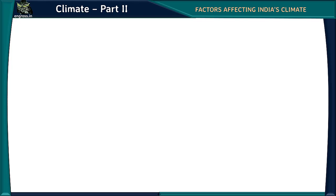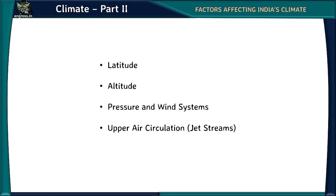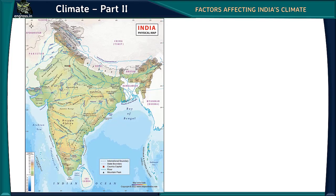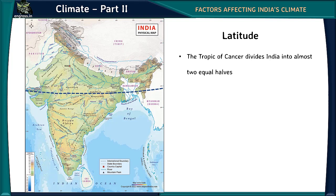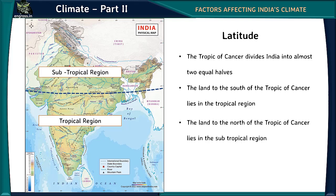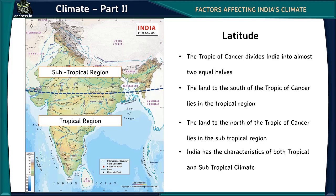Factors that affect India's climate are latitude, altitude, pressure and wind systems, and upper air circulation, i.e. jet streams. The Tropic of Cancer divides India into almost two equal halves. The land to the south lies in the tropical region, and to the north lies in the subtropical region. Thus, India has the characteristics of both tropical and subtropical climate.